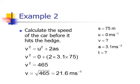If we want the speed of the car before it hits the hedge, we can use an equation of motion because we've got a constant acceleration. This gives us a speed of 21.6 meters per second.